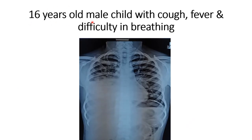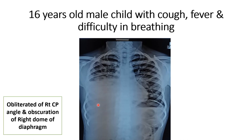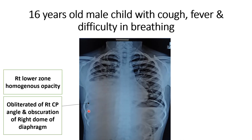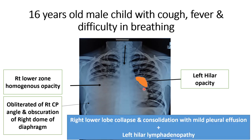This is the x-ray of a 16-year-old male who presented with cough, fever, and difficulty in breathing. There is homogeneous opacity in the right lower lung field with obliterated CP angle and obscuration of the right dome of the diaphragm. The trachea is in the central position — whenever there is pleural effusion the trachea shifts to the opposite side, but here collapse consolidation with pleural effusion keeps the trachea central. There is also left hilar opacity indicating left hilar lymphadenopathy. The diagnosis — right lower lobe collapse consolidation with mild pleural effusion and left hilar lymphadenopathy — was confirmed by CT scan.